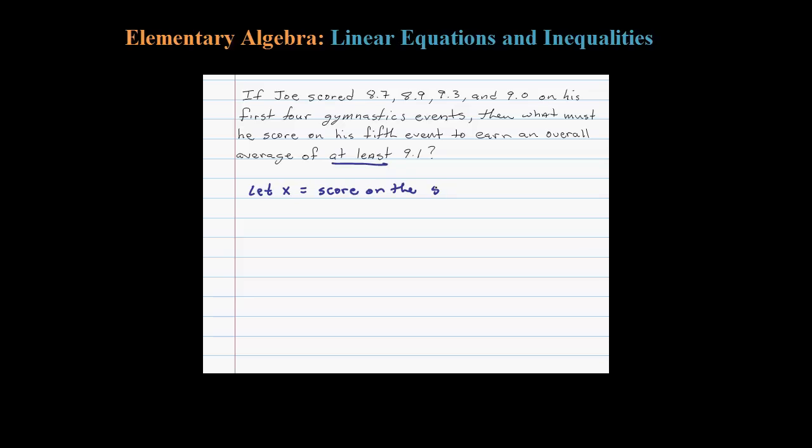Okay, that's what we're actually looking for. So to set this up, we're going to have to figure out the average, and Joe wants his average to be at least 9.1. So he wants his average to be greater than or equal to 9.1. To take an average, all we have to do is add those numbers up and divide by the number of events.